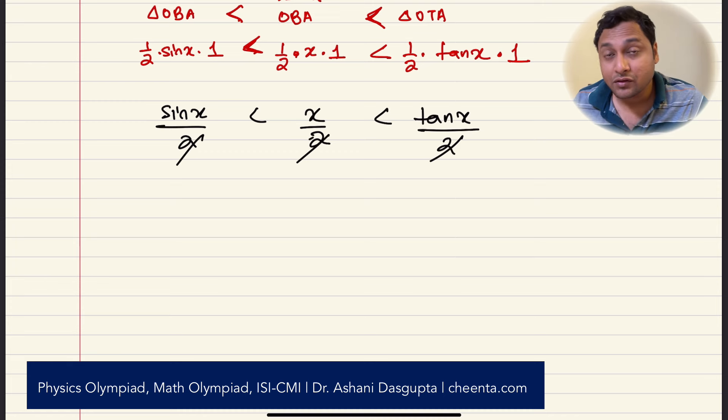Let's try to write down this carefully. So we have sine of x over 2 less than x over 2 less than tan of x over 2. Cancel off the 2s. So we have this. So now notice, this is very important, that since x is positive, we will just consider positive x for the moment.